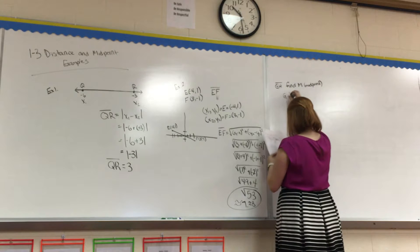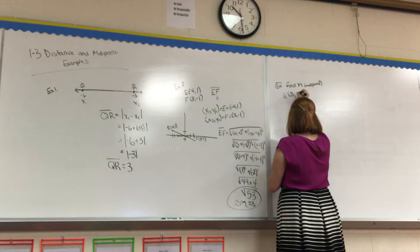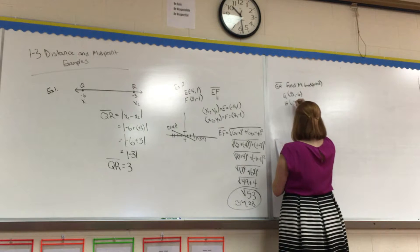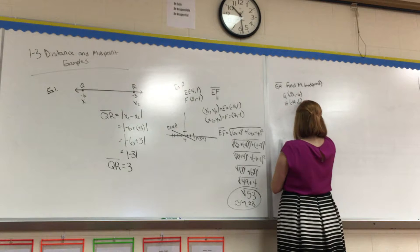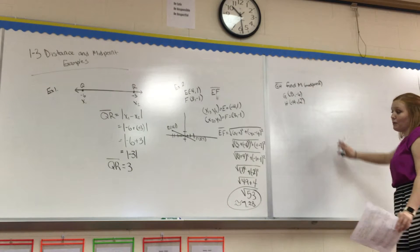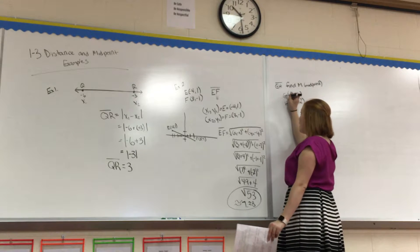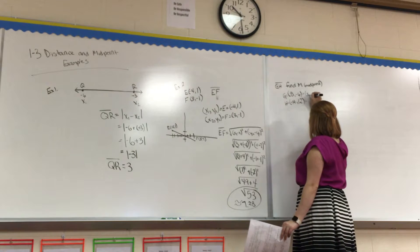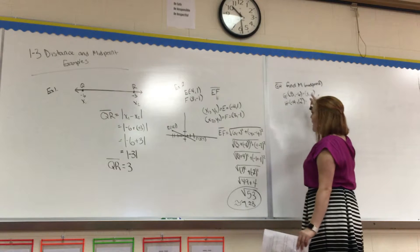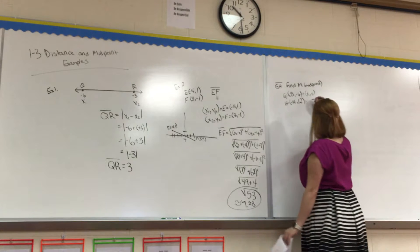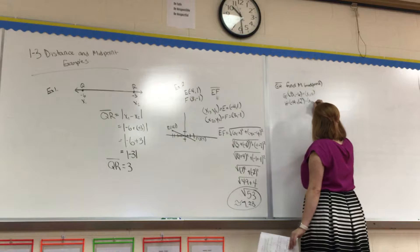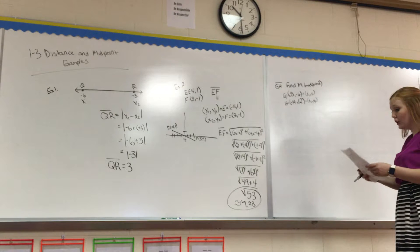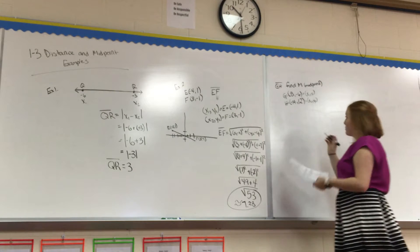We know G is located at 8, negative 6, and H is located at negative 14, 12. So, I'm not going to draw this out, but you guys are welcome to draw this out if a picture helps you. I'm just going to do it as our equations say. So, I'm going to label G as X1, Y1. Remember, you have to have an X and a Y when you do an ordered pair. And I'm going to do H as X2, because it's our second one, and Y2.